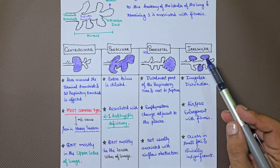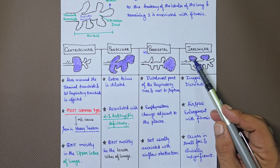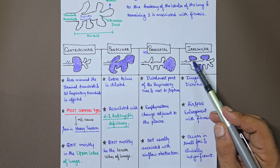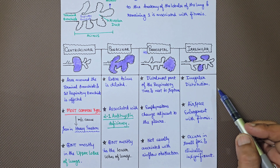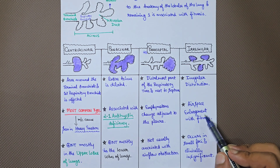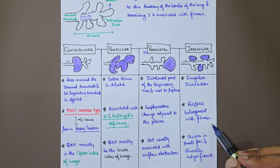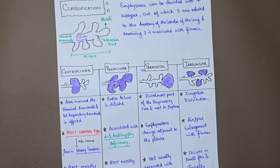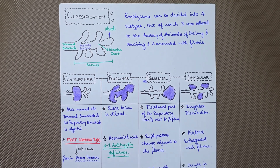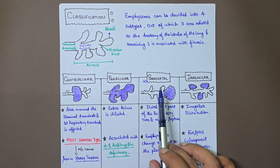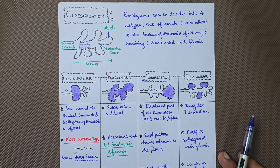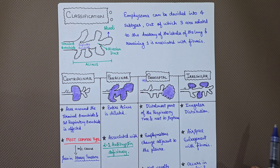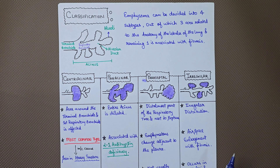The fourth type is irregular emphysema. There is an irregular distribution of affected areas. These airspace enlargements usually occur with fibrosis in small foci and are generally clinically insignificant. So the three anatomically-related subtypes are centriacinar, panacinar, and paraseptal, while the fourth — irregular — is associated with fibrosis.